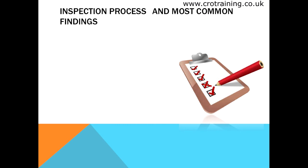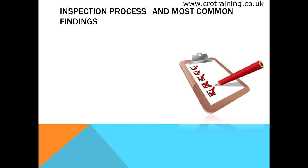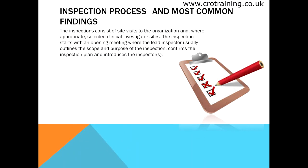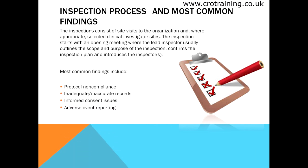Now that we have reviewed the differences between audits and inspections, let's take a look at what the inspection process is. Inspections consist of site visits to the organization and, where appropriate, selected clinical investigator sites. The inspection starts with an opening meeting where the lead inspector usually outlines the scope and purpose of the inspection, confirms the inspection plan, and introduces the inspectors. Upon completion of the inspection process, if inspectors find issues related to the clinical trial process, certain measures should be taken.